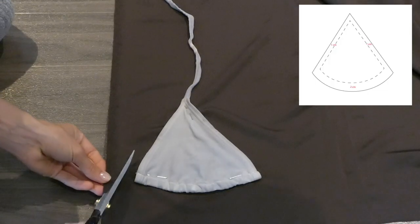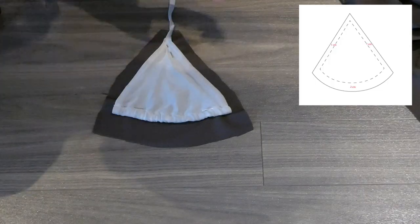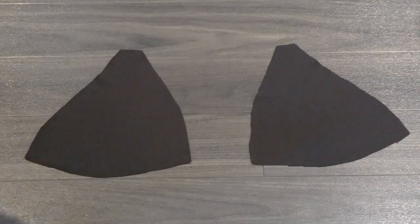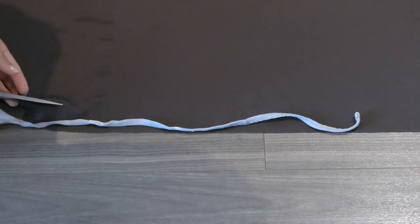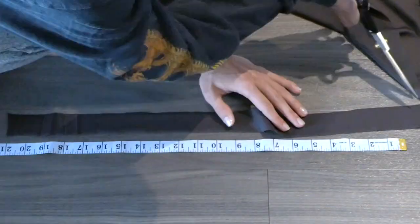We're going to start by placing our bikini on the fabric and cut it out with the same seam allowance as shown in the diagram. We're then going to cut the straps and this is a preference so they can really be as long or short as you'd like.